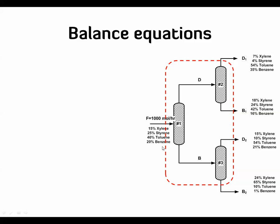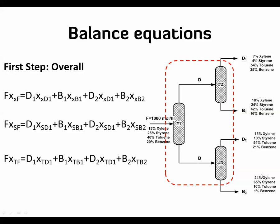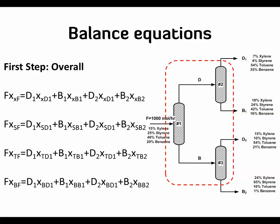styrene, toluene, and benzene. The flow rate of xylene in the feed is the total flow rate multiplied by the mole percent of that component in the feed. We do the same for xylene in D1, B1, D2, and B2, and repeat for the other three components. These four equations should allow us to solve for the four unknown stream flow rates.